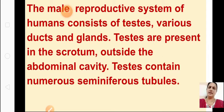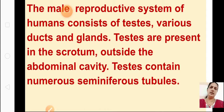In females, all the reproductive organs — the ovaries — are inside the abdominal cavity. In males, the testes are outside the abdominal cavity.